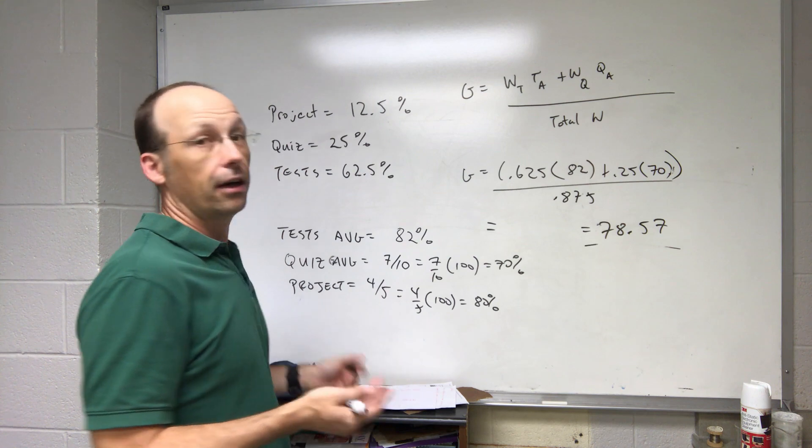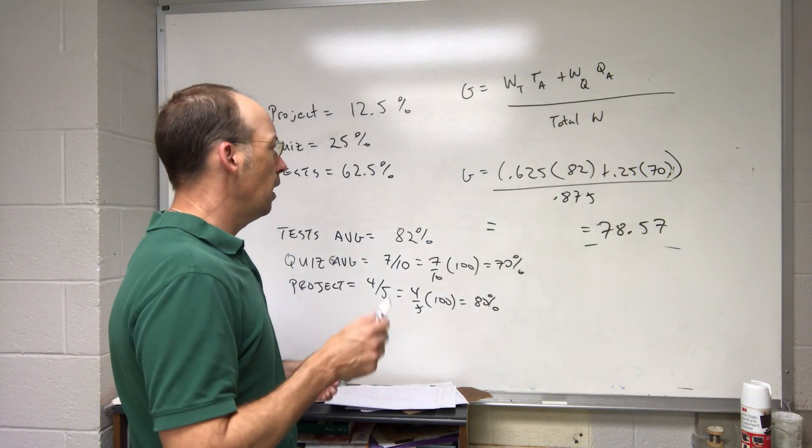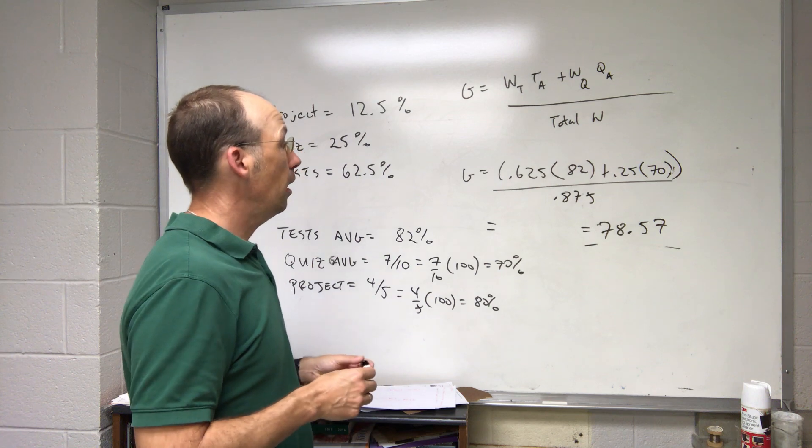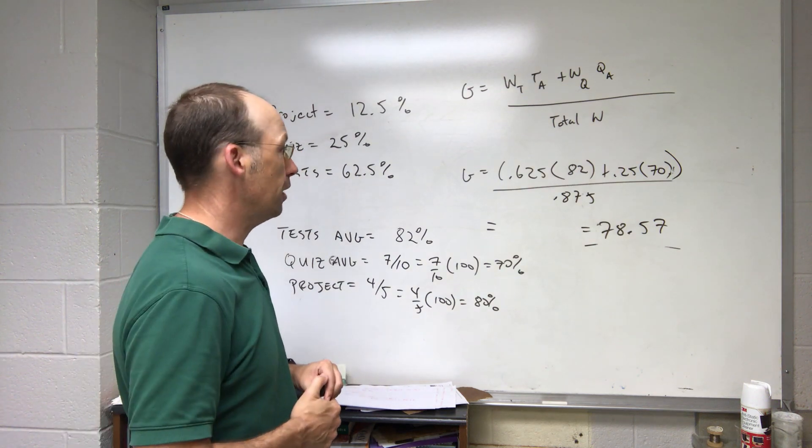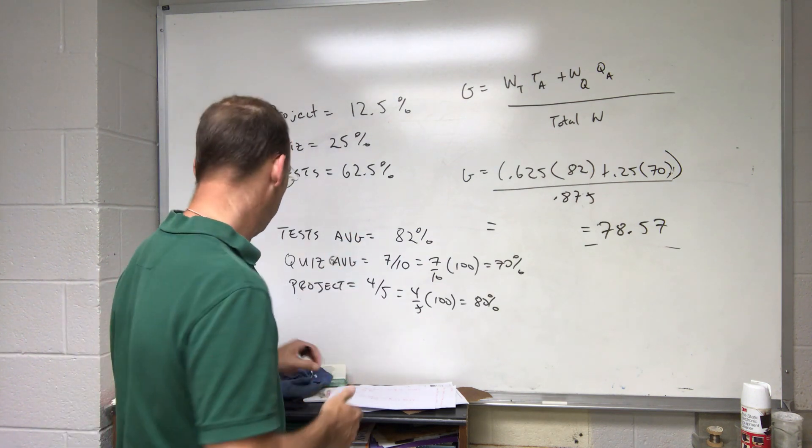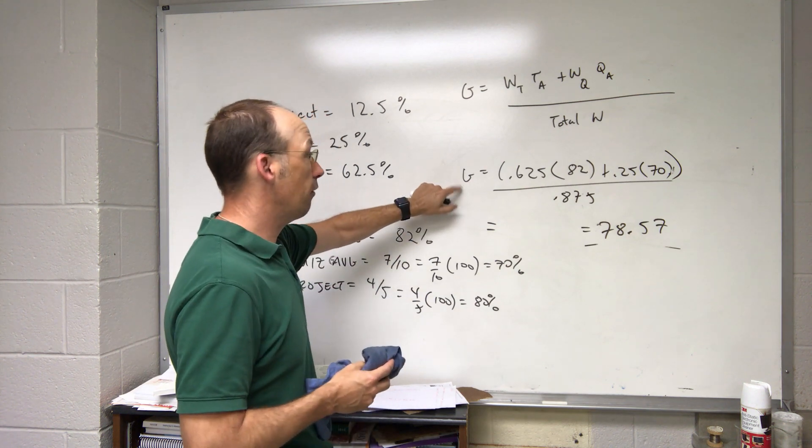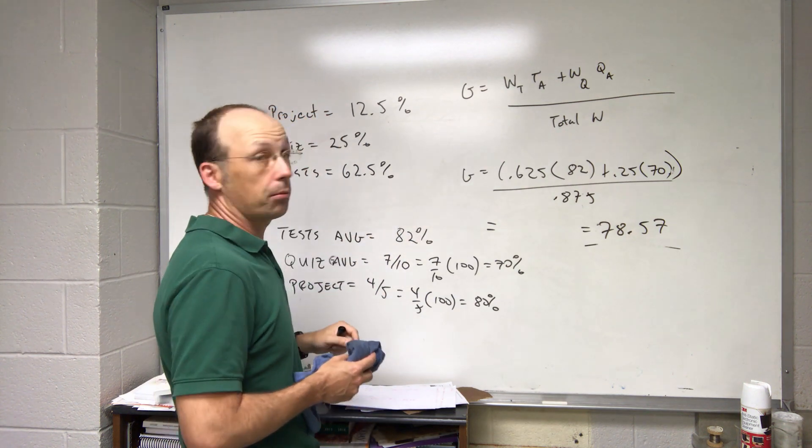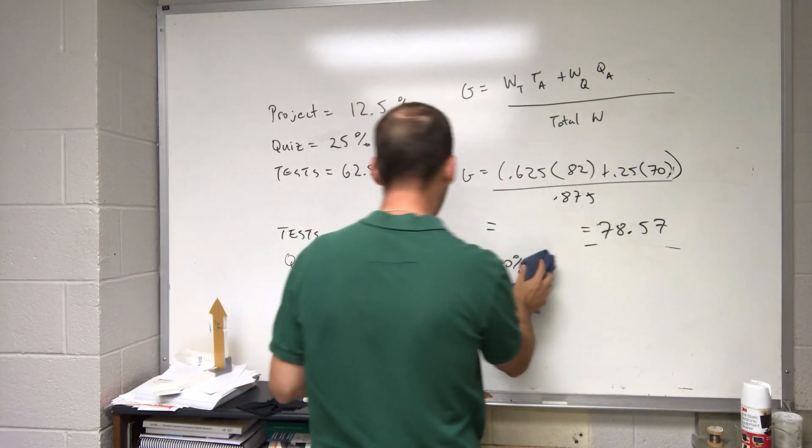That's what people want at the midterm. Let's do one other thing. Let's say what would I have to get on the project to get a B in the course? Okay, so in that case I'm going to say I know what the grade is going to be and I don't know what the project is going to be. So let's write that out as an equation. I can just modify this one. I'm going to write this right here.